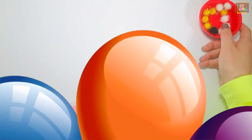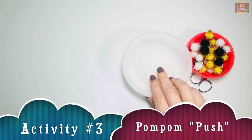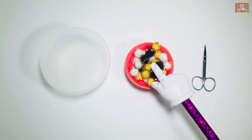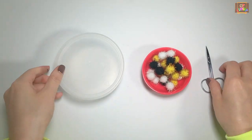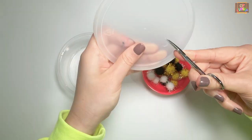Children can work on finger strengthening with activity number three. You will need scissors, pom-poms, and a plastic container. Make some holes and make sure your pom-pom fits.